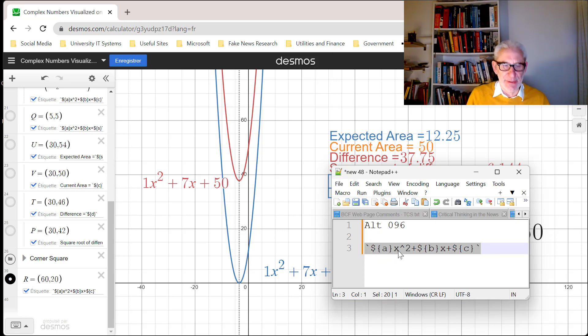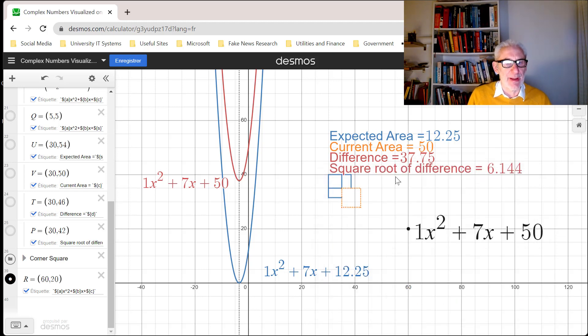I've got back tick, dollar, curly bracket a, close the curly bracket, then x which is the actual variable that Desmos is using to plot, it squared, plus dollar open curly bracket b, the next variable, close the curly bracket x, plus dollar curly bracket c, close curly bracket, and finish the whole thing off with another back tick.